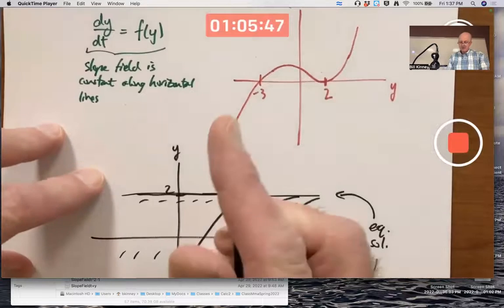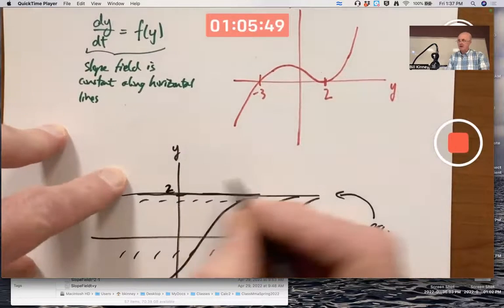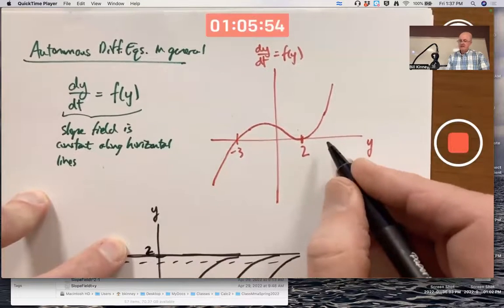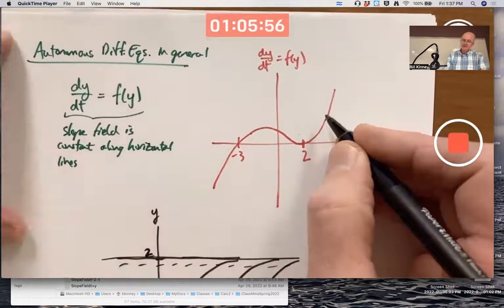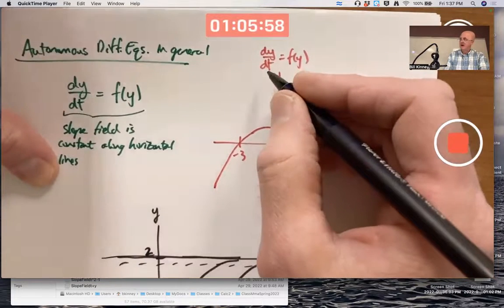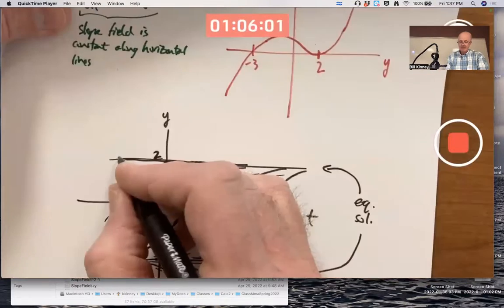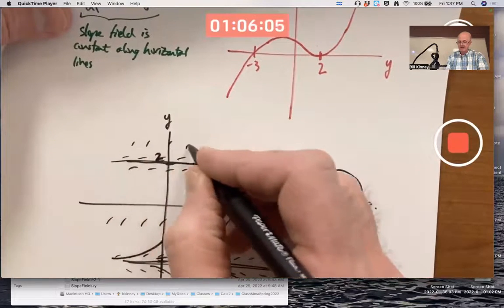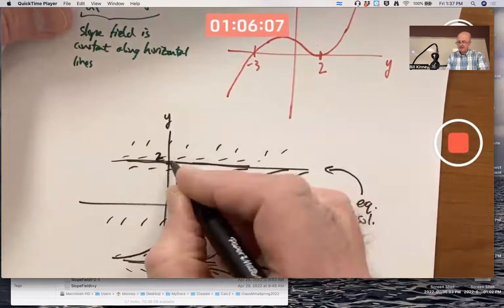When y is above 2, up here in this picture, y is over here. The output of this function is positive, meaning solutions have positive slopes, close to zero when you're just above 2, but then getting larger as you get higher away from 2. And your solutions look like this.